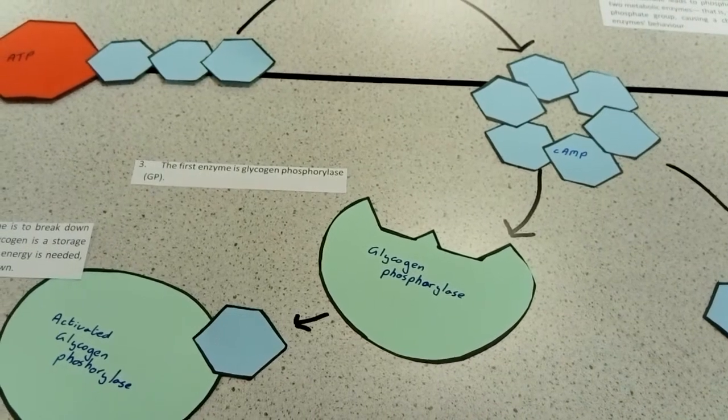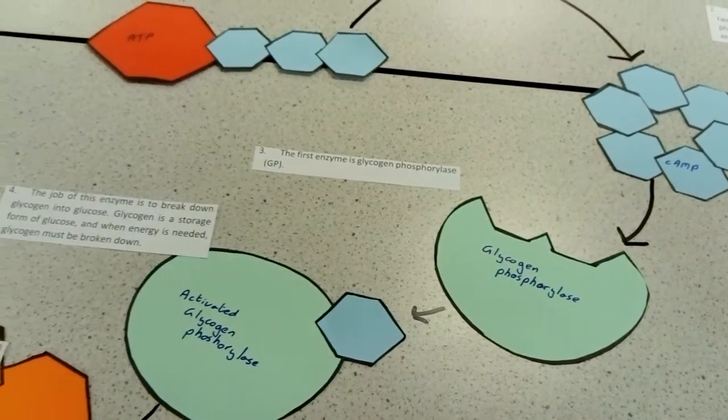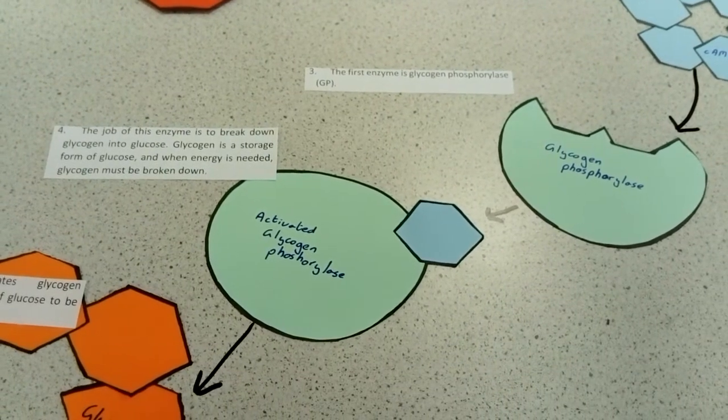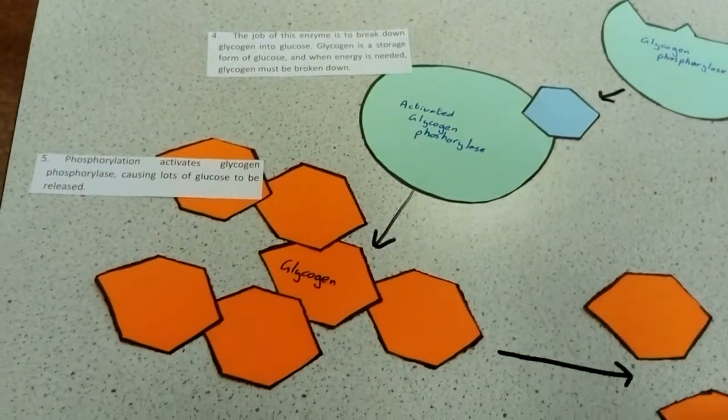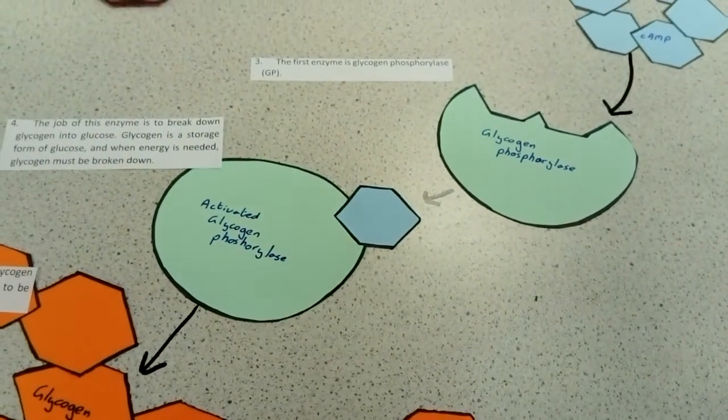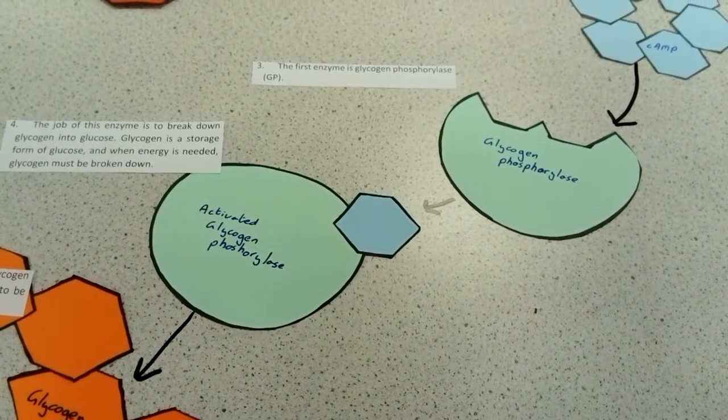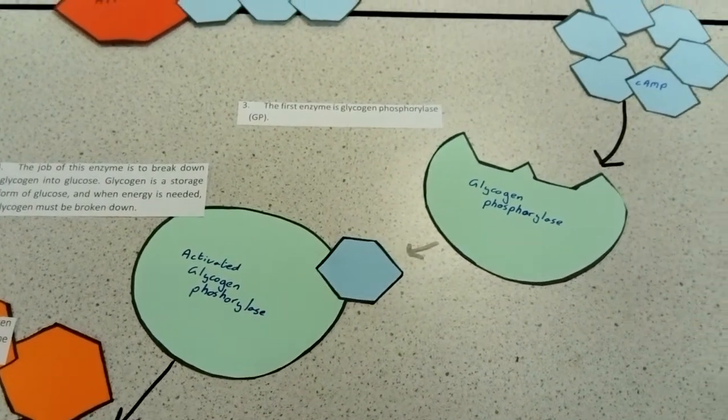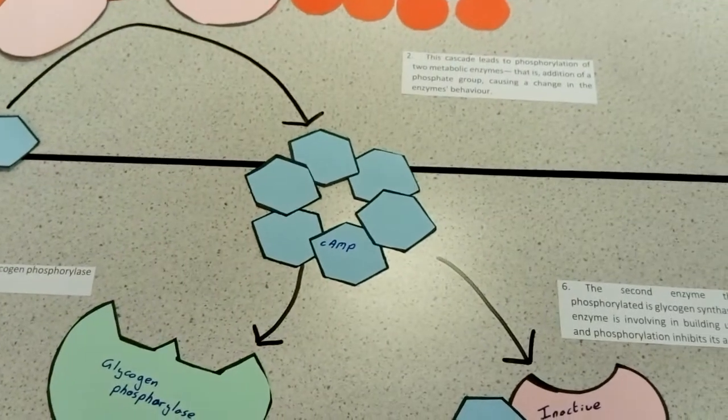The job of glycogen phosphorylase is to break down stored glycogen into glucose. When it's activated by adding a phosphate molecule to it, that enables it to do this. Secondly, our cyclic AMP will also bind onto a molecule of glycogen synthase.